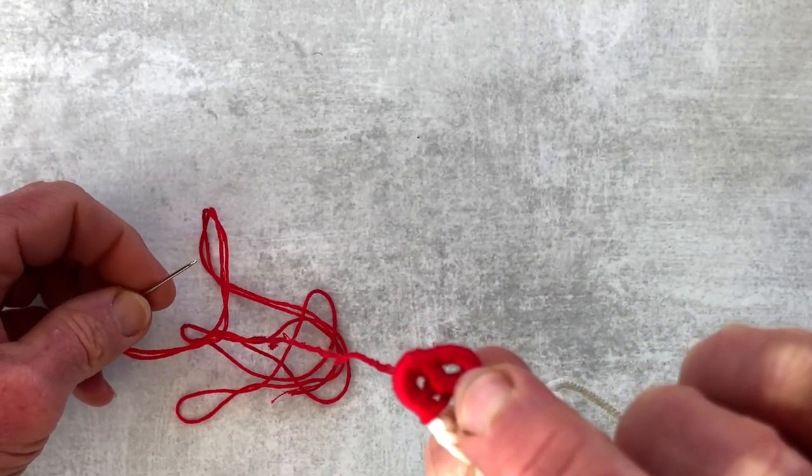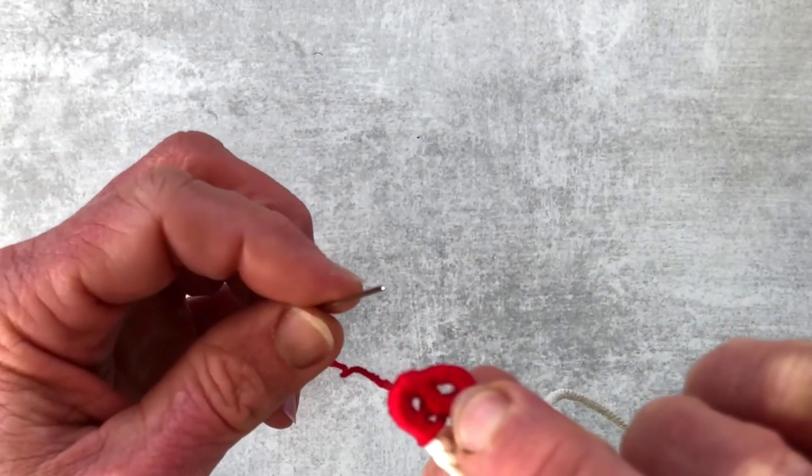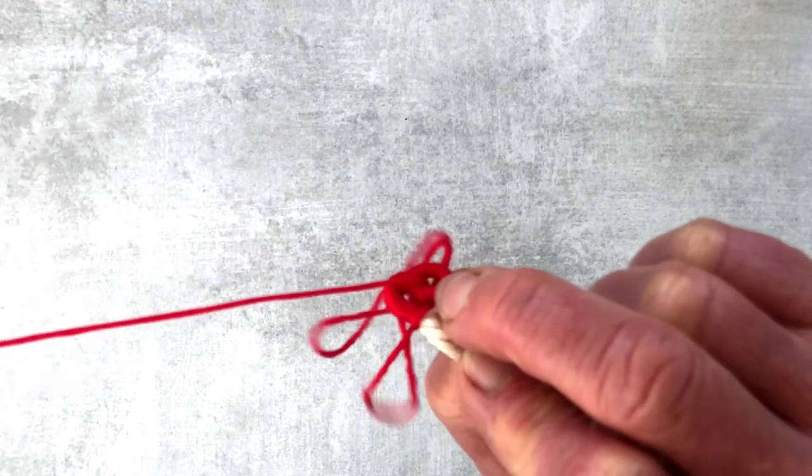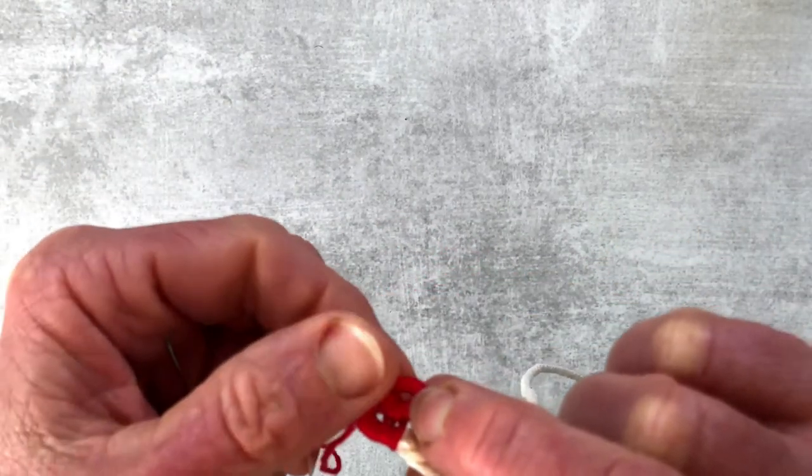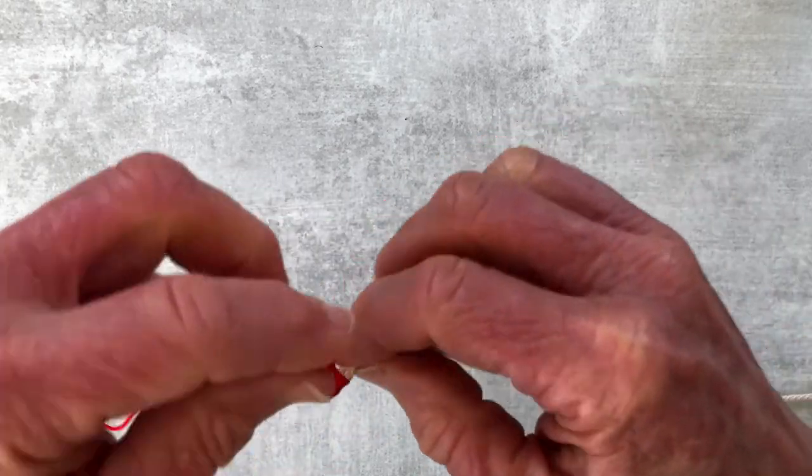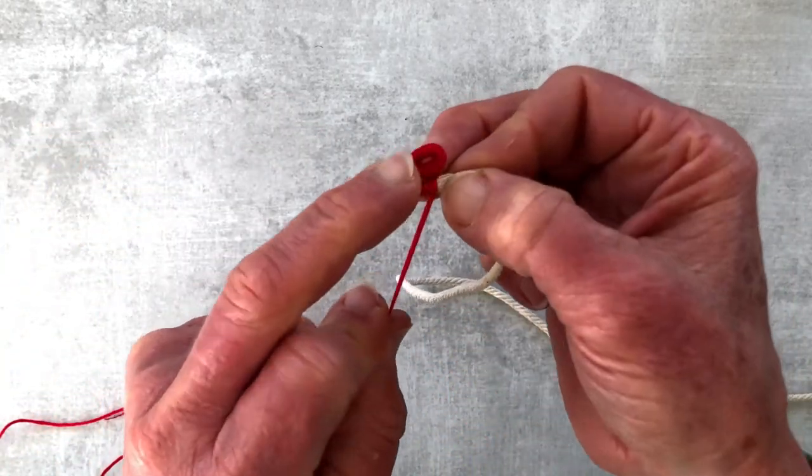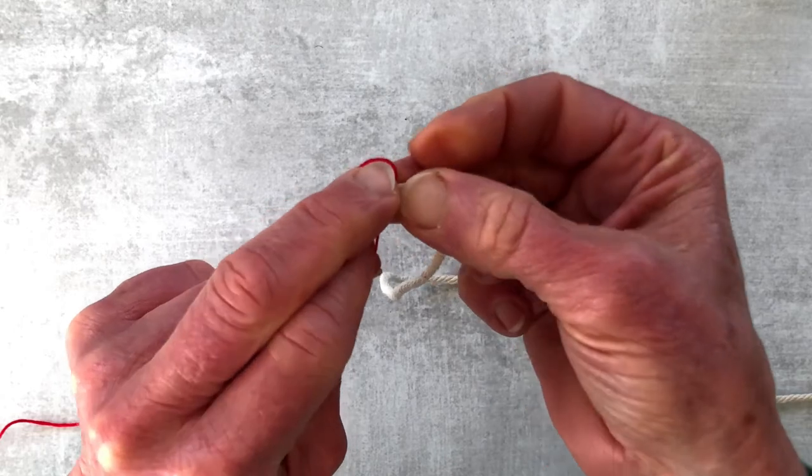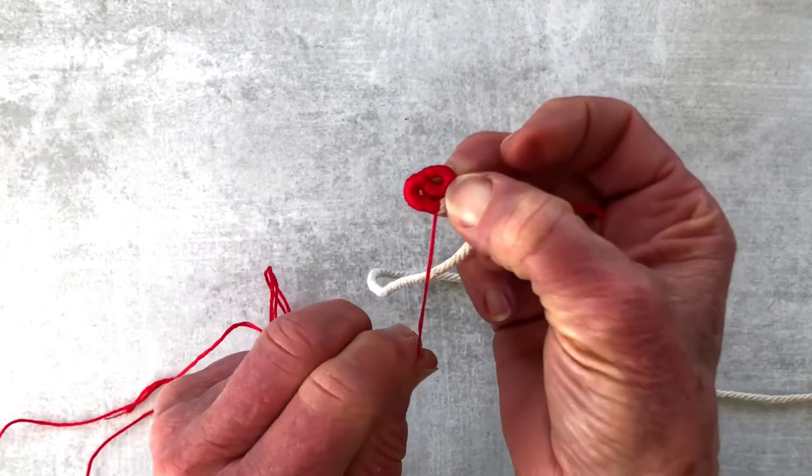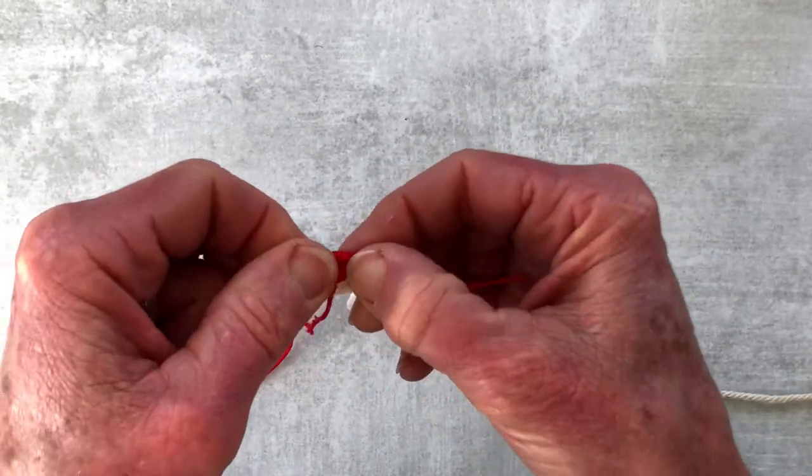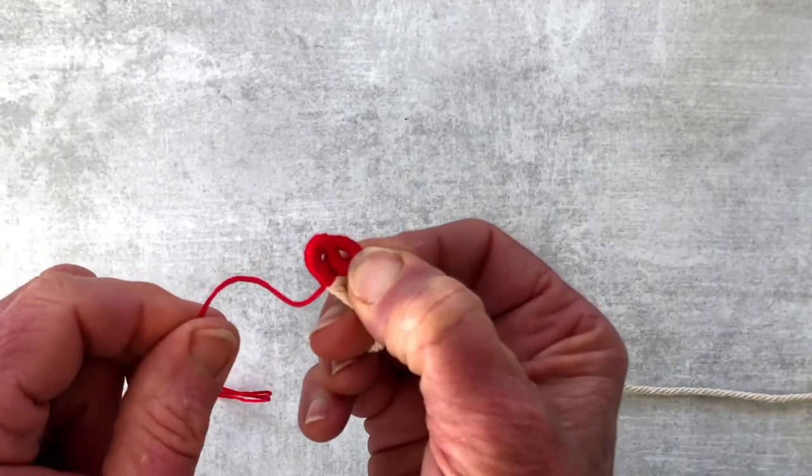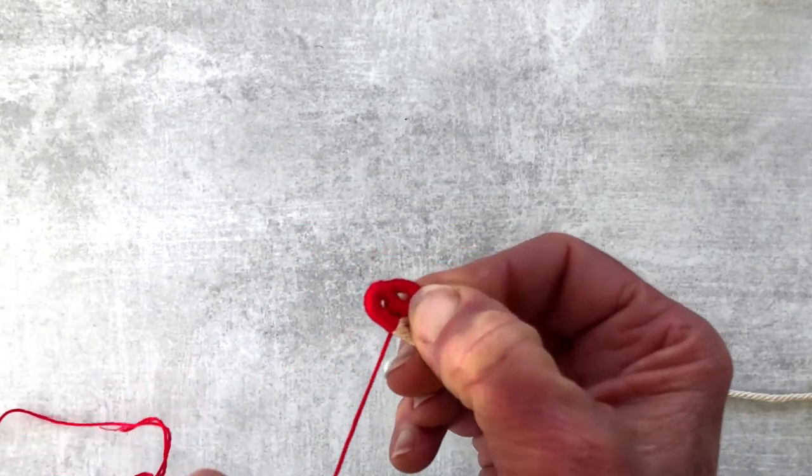And I'll do the same. I'm coming up through the center and bringing the embroidery floss around the back side of the cording that's laid on top. And then I'll wind about four more times.